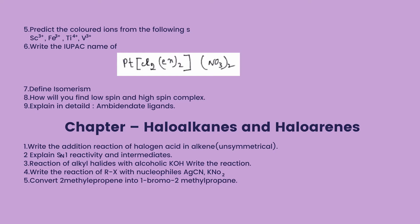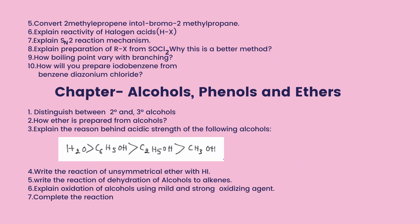Chapter: Haloalkanes and Haloarenes. Write the addition reaction of a halogen acid to an alkene. Explain SN1 reactivity and intermediates. Write the reaction of alkyl halides with alcoholic potassium hydroxide. Write the reaction of RX with nucleophiles AGCN and KNO₂. Convert 2-methylpropene into 1-bromo-2-methylpropene. Explain the reactivity of halogen acids. Explain the SN2 reaction mechanism. Explain the preparation of RX from SOCl₂ and why this is a better method. How does boiling point vary with branching? How will you prepare iodobenzene from benzenediazonium chloride?